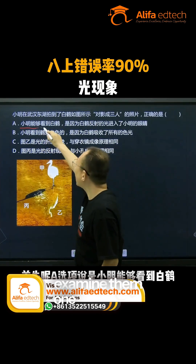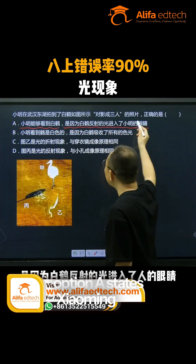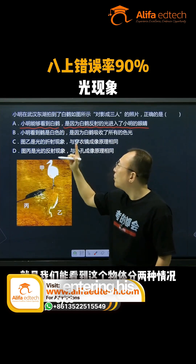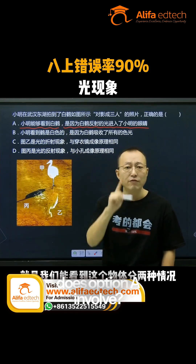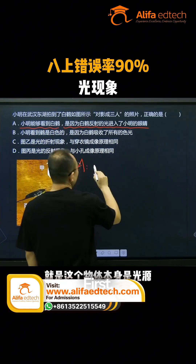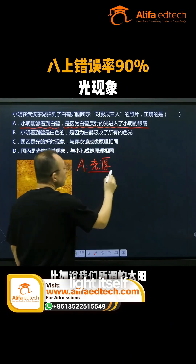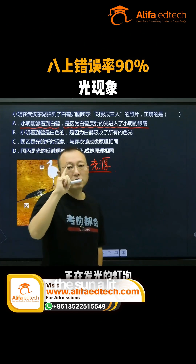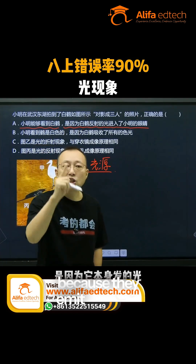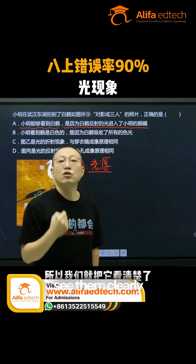Let's examine them one by one. Option A states: Xiaoming can see the white crane because of light reflected from the crane entering his eyes. We can see objects in two situations. First, when the object itself is a light source — it emits light itself. For example, the sun, a lit light bulb, or a burning candle. We can see these because they emit light that enters our eyes.